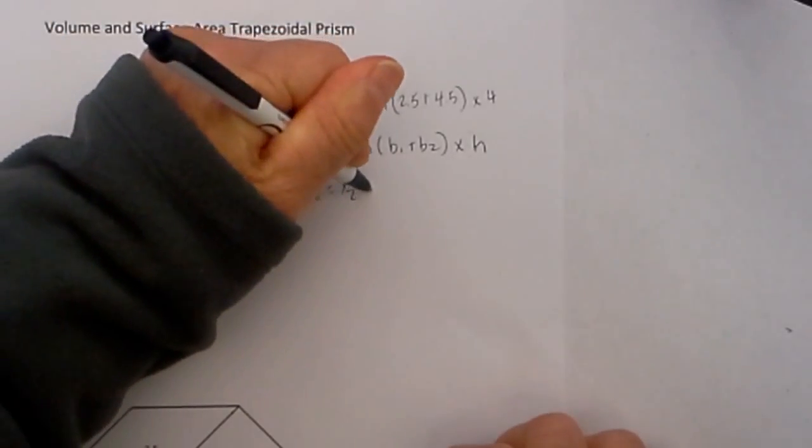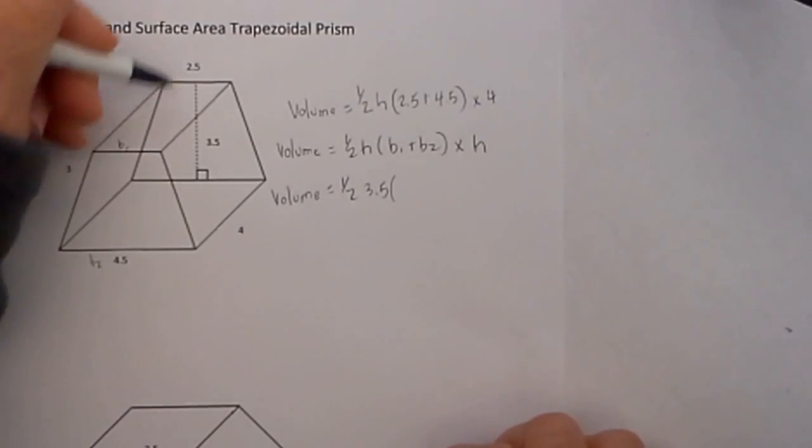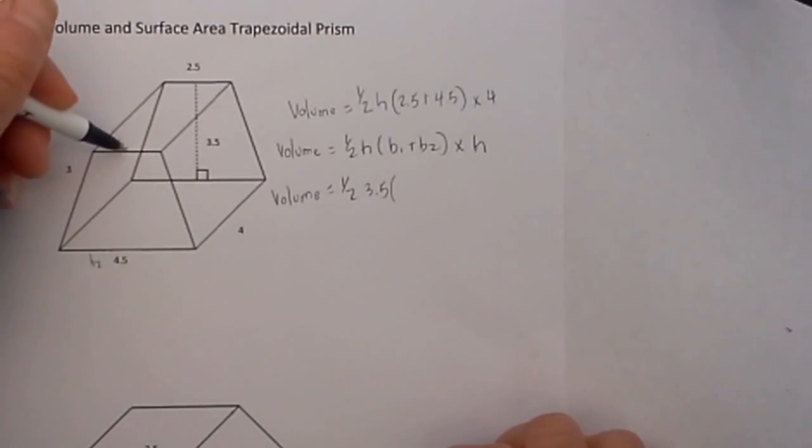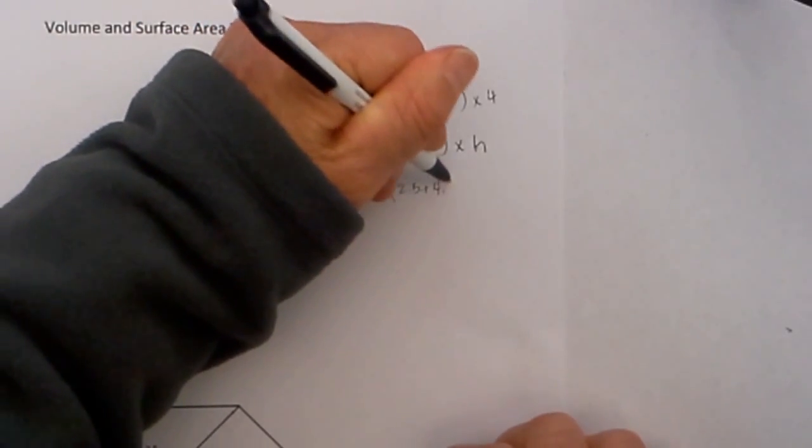Times base 1 is given here because the trapezoid has bases of two different lengths. So that will be 2.5 plus 4.5.